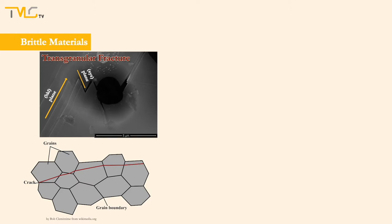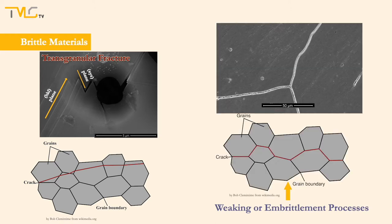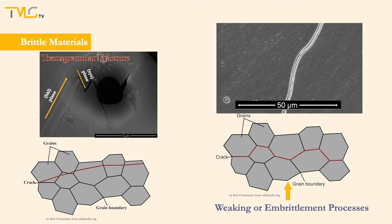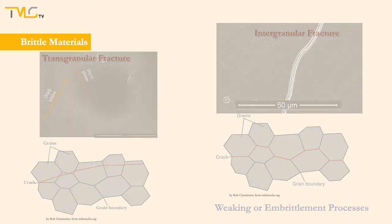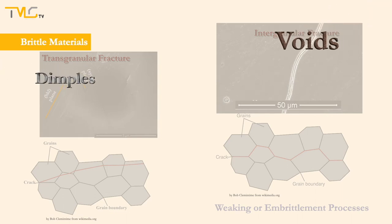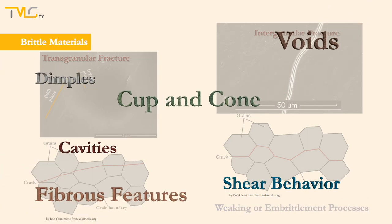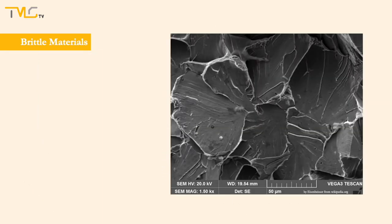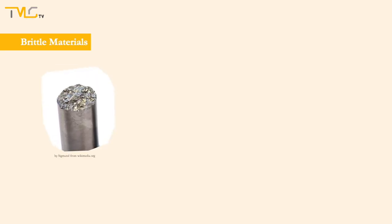In some other cases, after a material goes through some weakening or embrittling processes, cracks may propagate along the boundaries of the grains rather than through them. Such a fracture is called an intergranular fracture. Since the crack initiation and propagation processes are quite different, none of the features seen at the fracture surface of ductile materials are seen at the fracture surface of brittle materials. Unlike ductile materials, a flat fracture surface showing no sign of dimples or any plastic deformation features can be seen at the fracture surface of brittle materials.